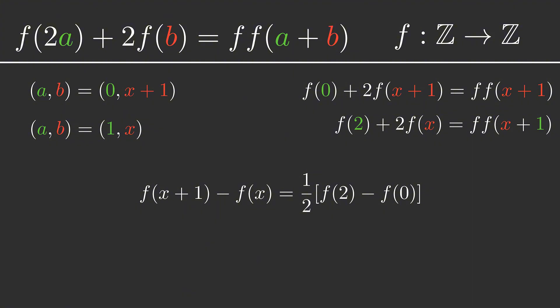And what does the left hand side represent? Well it's f evaluated at consecutive integers, so what we've discovered is that the relationship between the outputs of the function for two consecutive integers is always the same.